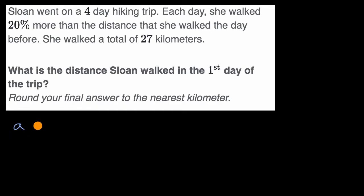On the first day, she walks A kilometers. Now, how about the second day? Well, they tell us that each day, she walked 20% more than the distance she walked the day before. So, on the next day, she's going to walk 20% more than A kilometers. So, that's 1.2 times A.